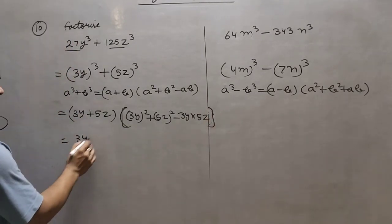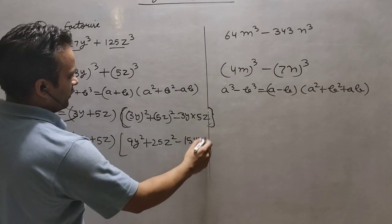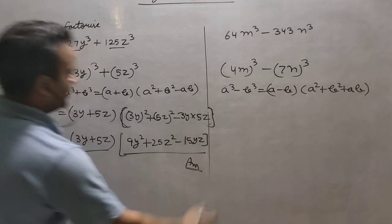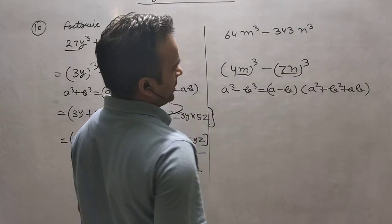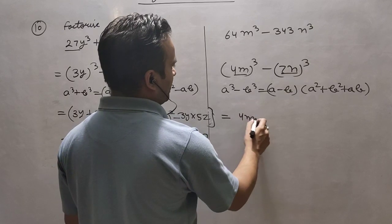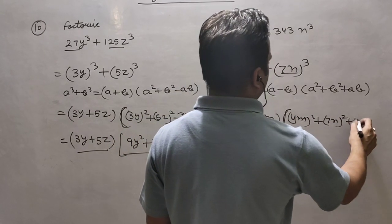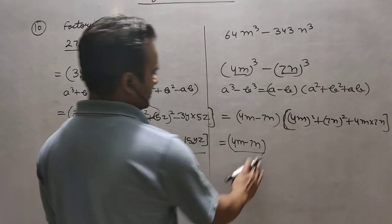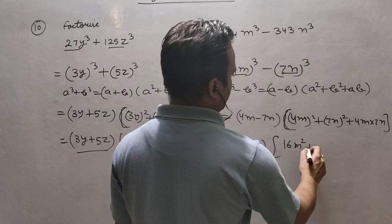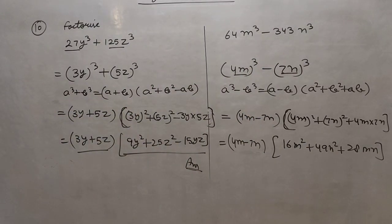So we get (3y + 5z)(9y² - 15yz + 25z²). This is the first factor and the second factor — already they are in factorized form. Now for the second part with (4m)³ - (7n)³, using a = 4m and b = 7n, it is (4m - 7n)((4m)² + (4m)(7n) + (7n)²), giving (4m - 7n)(16m² + 28mn + 49n²). So there are two factors in this second part as well.